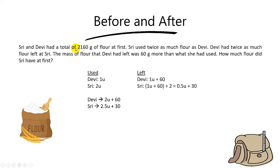Okay? And now you can focus on the first sentence. Since they have a total of 2,160 grams of flour at first, we can now form an equation. Okay? And the equation will be the total mass.